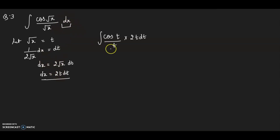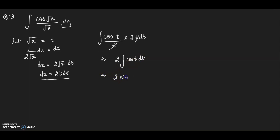t and t cancel, so you get 2 integration of cos(t) dt, which equals 2 sin(t) plus C. The question does not end here because you have to put back the assumed values: √x = t, giving the final answer 2 sin(√x) + C. If you leave the question without substituting values back, you may lose half or one mark.